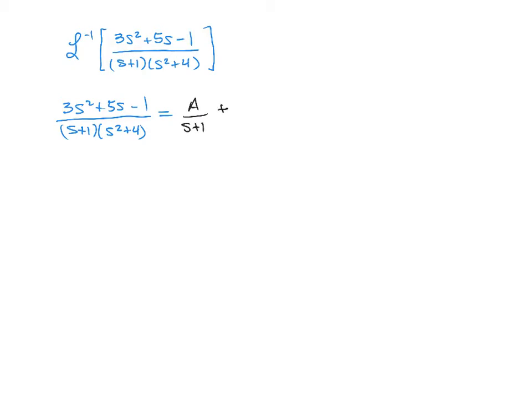But the second factor is referred to as an irreducible quadratic because we can't factor it or break it down any further. So that needs Bs plus C as a numerator over that s squared plus 4 denominator.